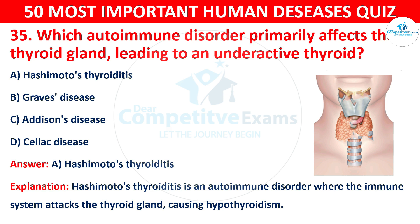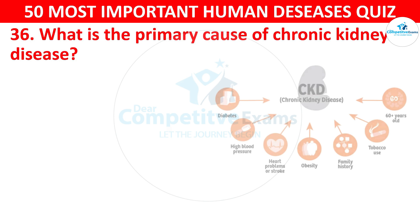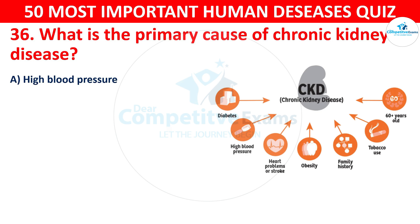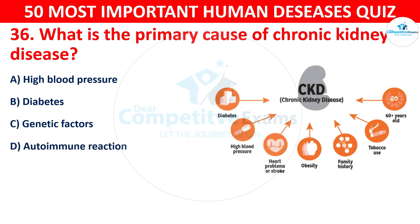Question 36: What is the primary cause of chronic kidney disease? The options are: A) High blood pressure, B) Diabetes, C) Genetic factors, or D) Autoimmune reactions. The correct answer is B — diabetes. Diabetes is a major cause of chronic kidney disease, leading to kidney damage over time.